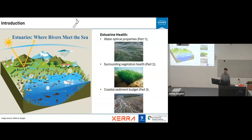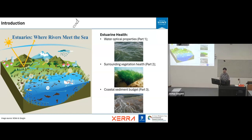My thesis is all about estuaries — they are very important and complicated environments that connect the inland waters and the open ocean. That's why we have to evaluate and monitor estuary health. In my thesis I divide the work into three parts: the first part is water optical properties; the second part is surrounding vegetation health, like seagrass and microphytobenthos; and the third part is coastal sediment budget, estimating how much sediment is going to be accumulated, for example in Tauranga Harbour, Ohiwa Harbour, and other estuaries in New Zealand.